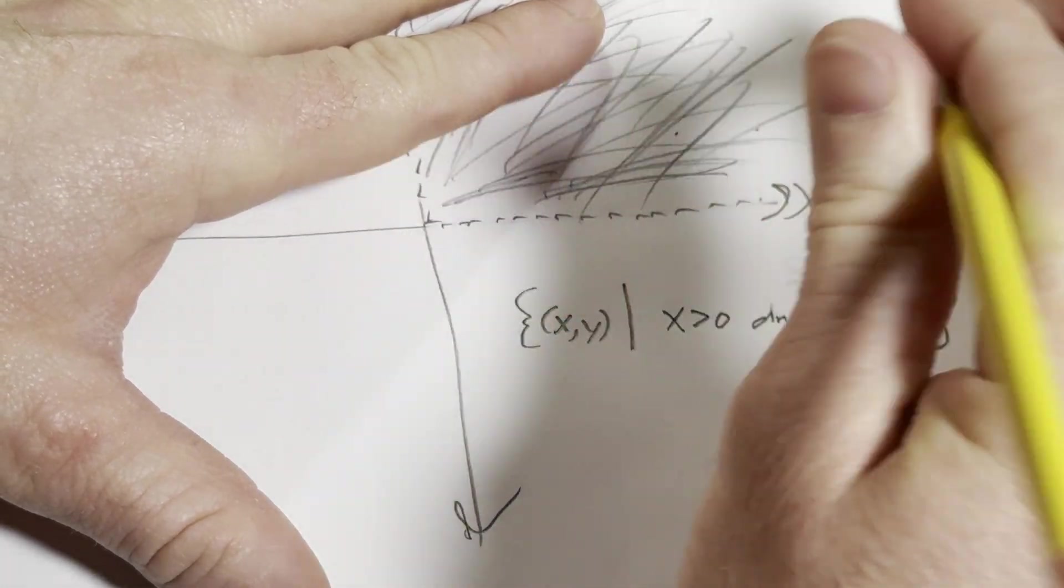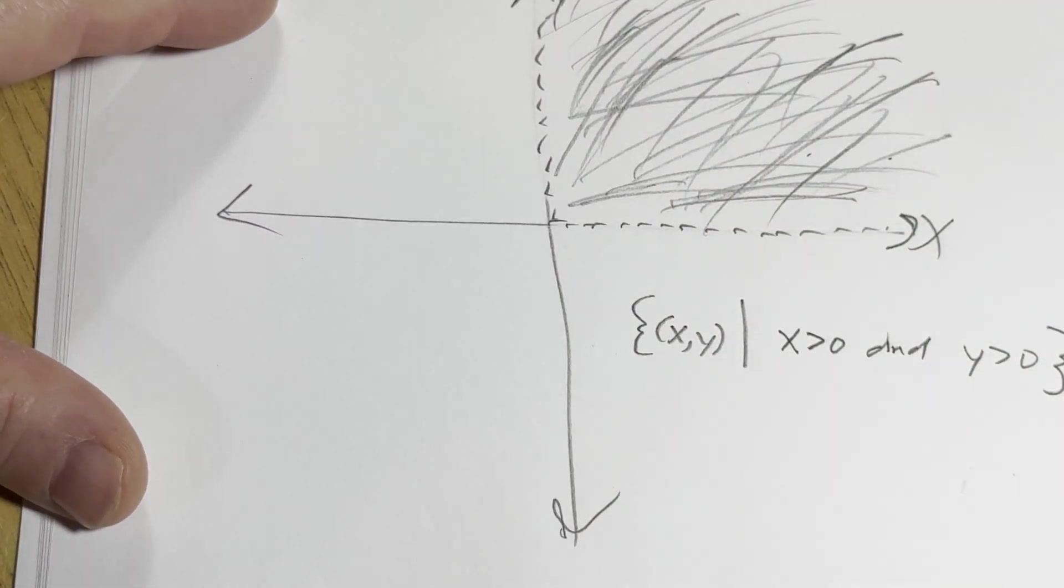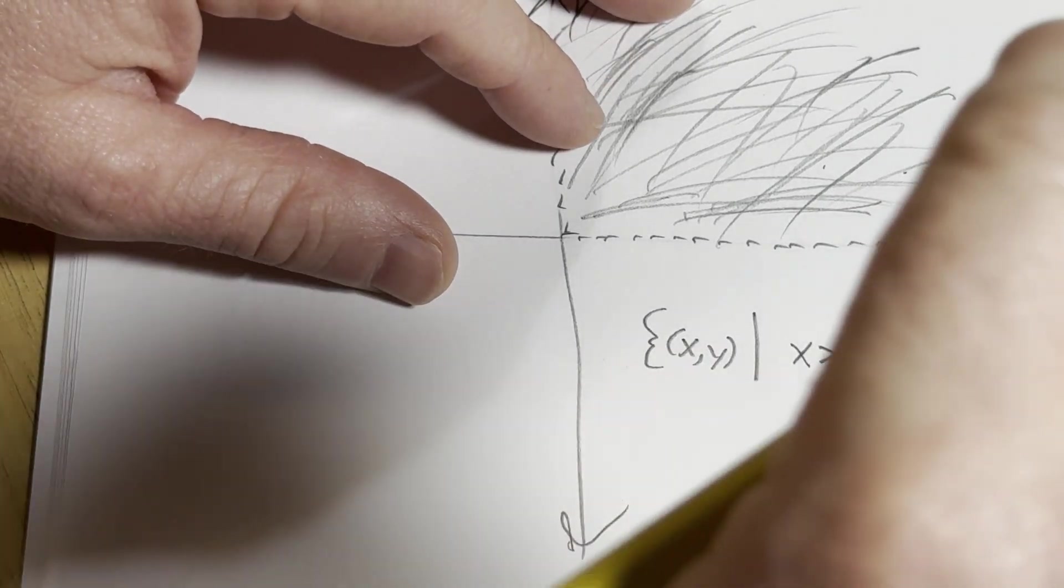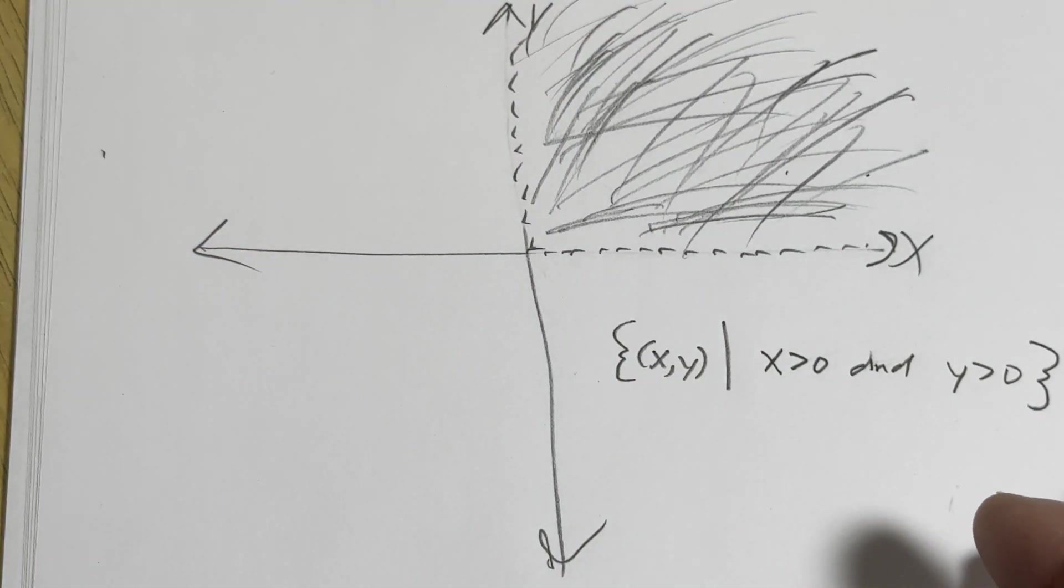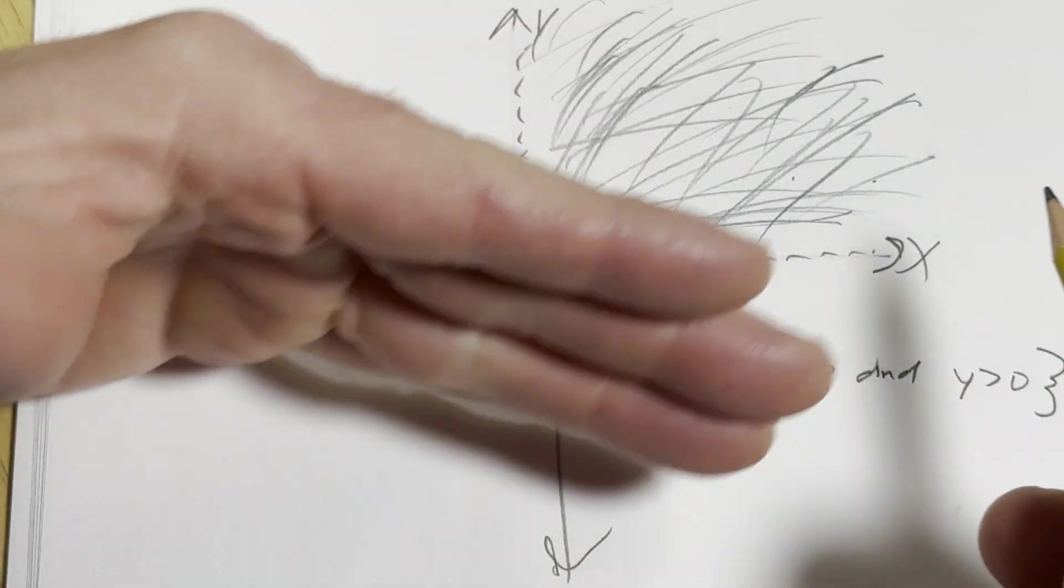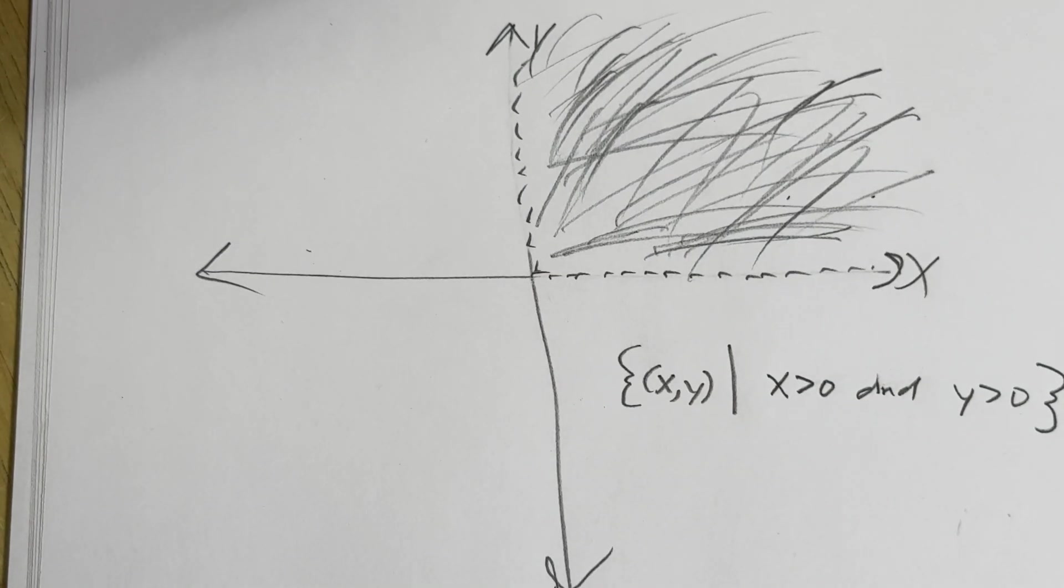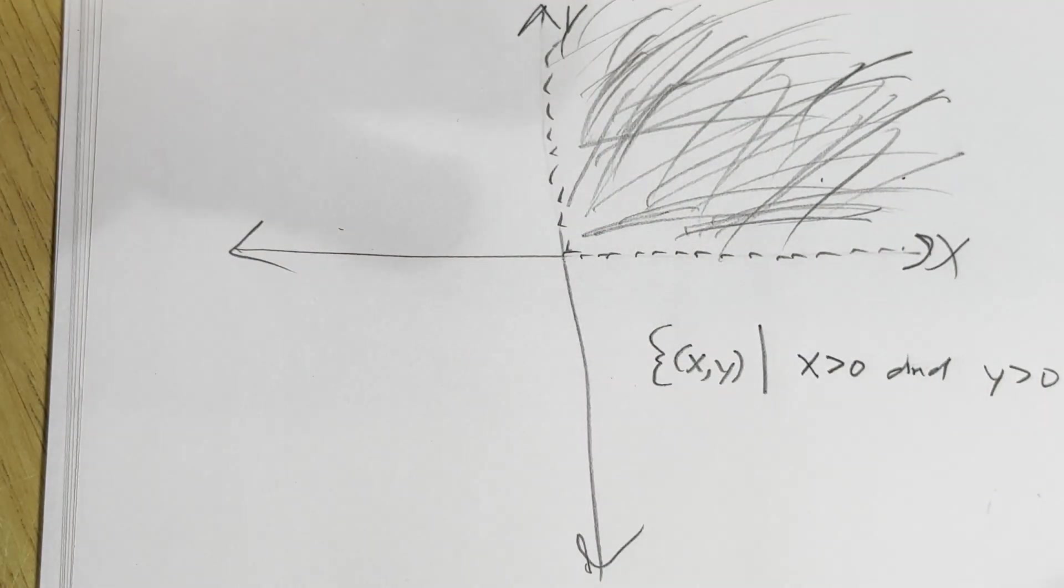So that I think that would be that set. Correct me if I'm wrong. And I'll just delete the video if I made a mistake. But hopefully that looks good to me, because x is positive and y is positive. So there we go. So that's that set. And it's clearly an open set.